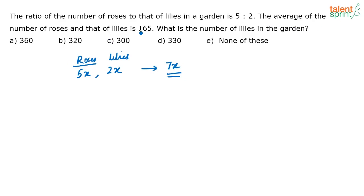The average of the number of roses and the lilies is given as 165. So the average of the number of roses and lilies in the garden is 165. What is average of number of roses and lilies? It is nothing but 5x plus 2x divided by 2.